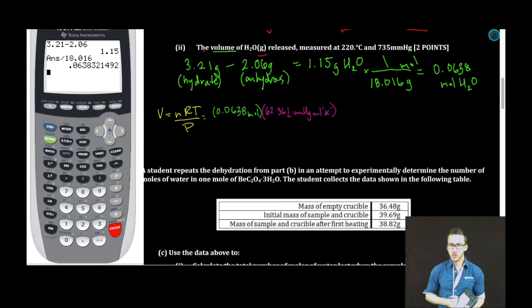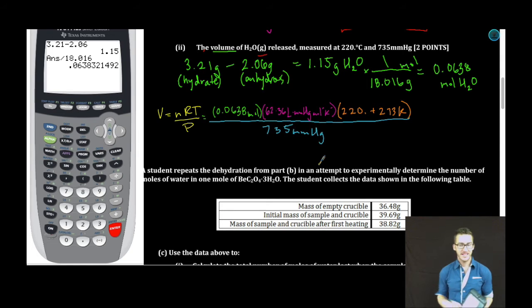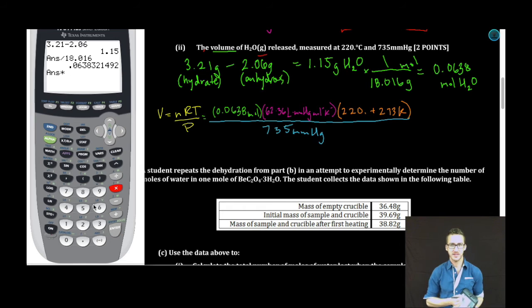Temperature, be cautious here. Remember, with the gas laws, we always want our temperature in Kelvin. So, I'm going to take my 220, add to it 273. That'll get me to Kelvin. Finally, divide by our pressure. 735 millimeters mercury. Calculator time. We've got number of moles times 62.36 times 220 plus 273, divided by 735.